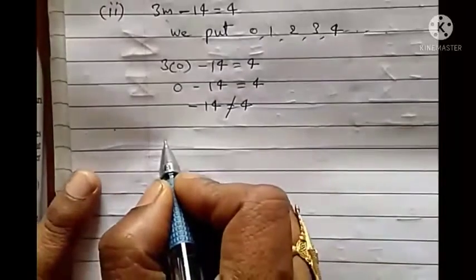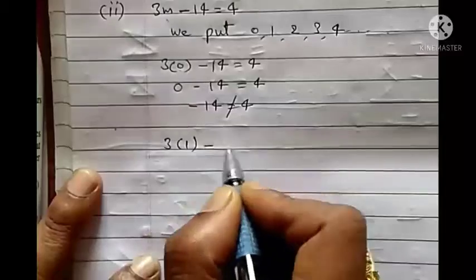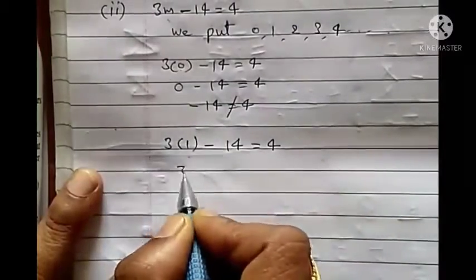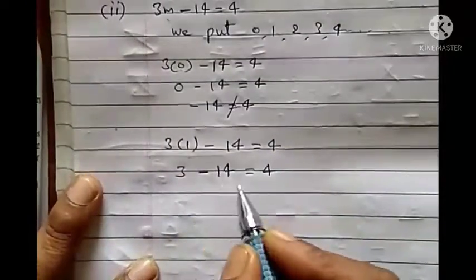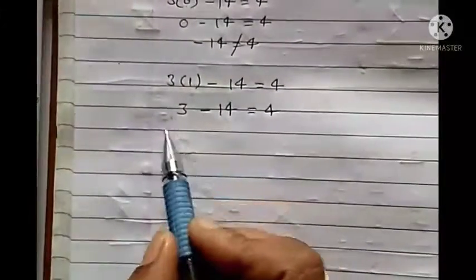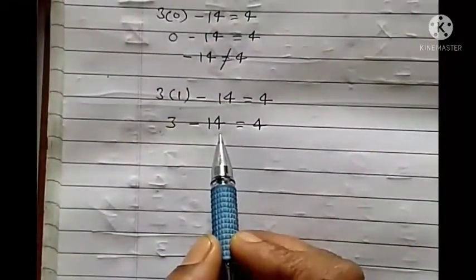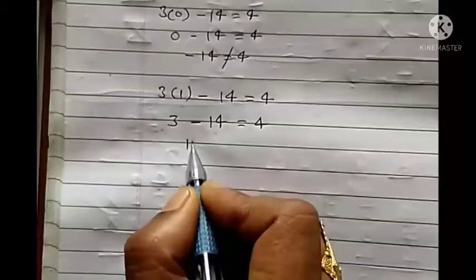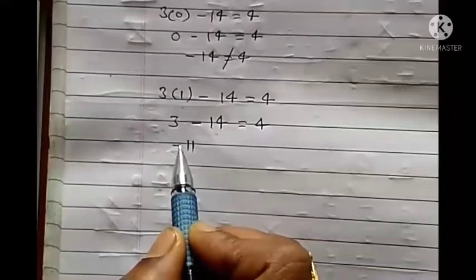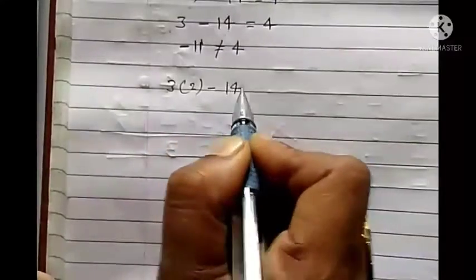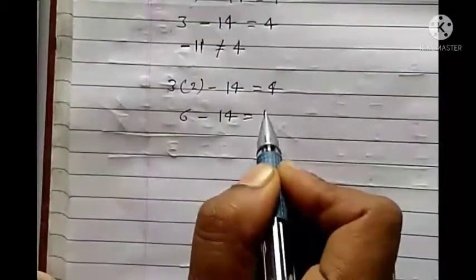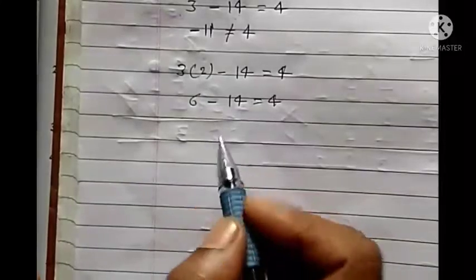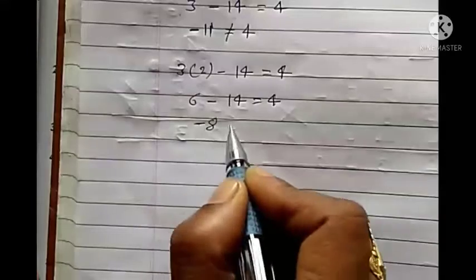After that we put m equals to 1: 1 minus 14 gives minus 13, not equal to 4. Then m equals to 2: 3 times 2 is 6, 6 minus 14 gives minus 8, not equal. Then m equals to 3: 3 threes are 9, 9 minus 14 gives minus 5, not equal. Then m equals to 4: 3 fours are 12, 12 minus 14 gives minus 2, not equal.